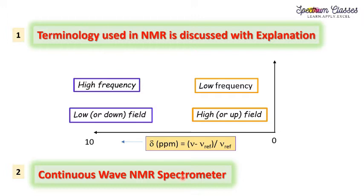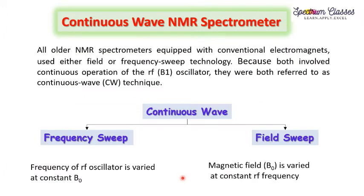Let's start with the continuous wave NMR spectrometer. In this continuous wave NMR spectrometer, two different technologies are used, and on the basis of that, these continuous wave NMR spectrometers are categorized as frequency sweep and field sweep.